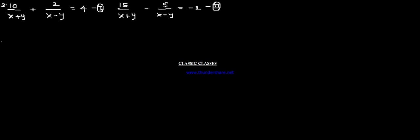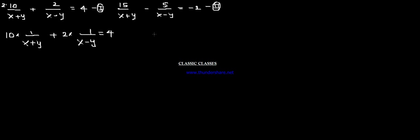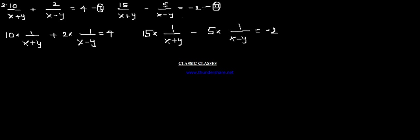Let's see this particular sum and how to deal with it. We will separate the numerator part from the whole fraction. So this will appear like 10 into 1 upon x plus y, plus 2 into 1 upon x minus y, is equals to 4. Similarly for the second equation, 15 into 1 upon x plus y, minus 5 into 1 upon x minus y, is equals to minus 2.